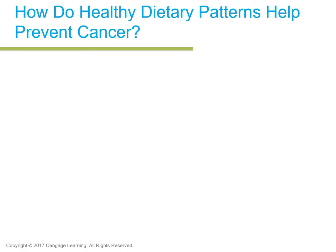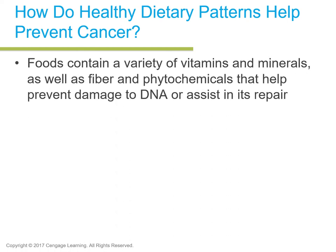How do healthy dietary patterns help prevent cancer? It comes down to vitamins, minerals, phytochemicals, and how they interact with our cells at the cellular level. Foods with these nutrients help prevent damage to DNA or assist in repair — many by donating electrons. Free radicals in the body have unpaired electrons and become very harmful, searching to steal electrons from other cells to become stable. Vitamins, minerals, and phytochemicals donate electrons to these free radicals to stabilize them — that's essentially how they assist.